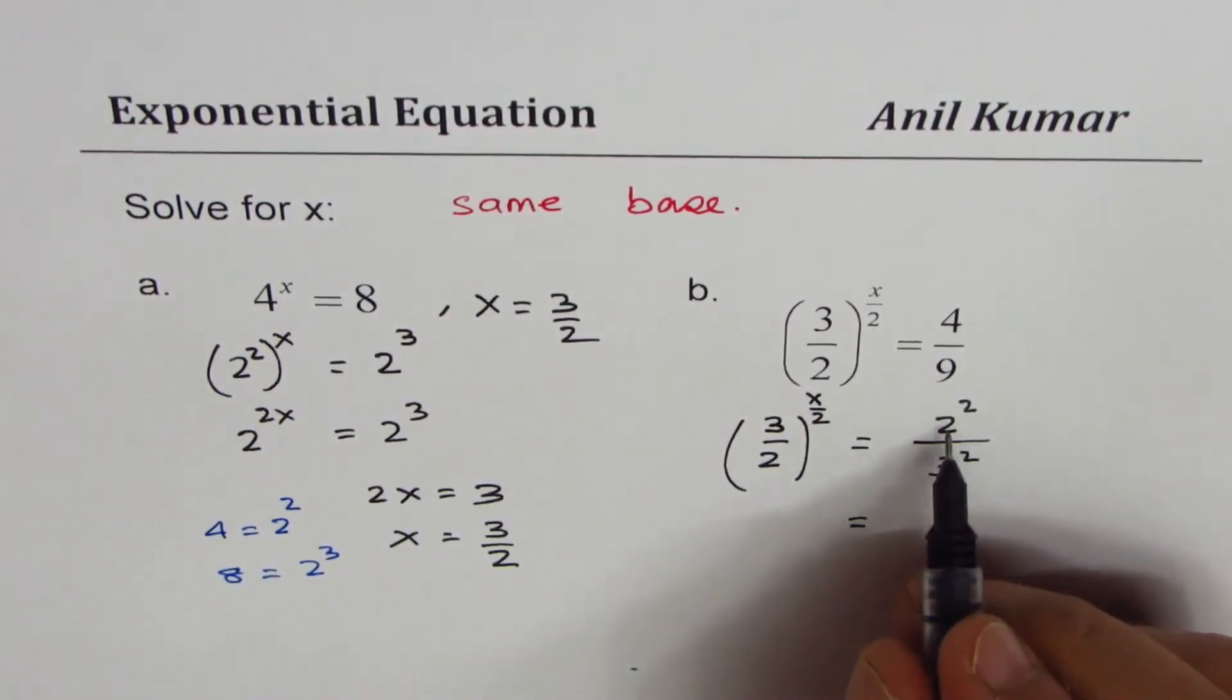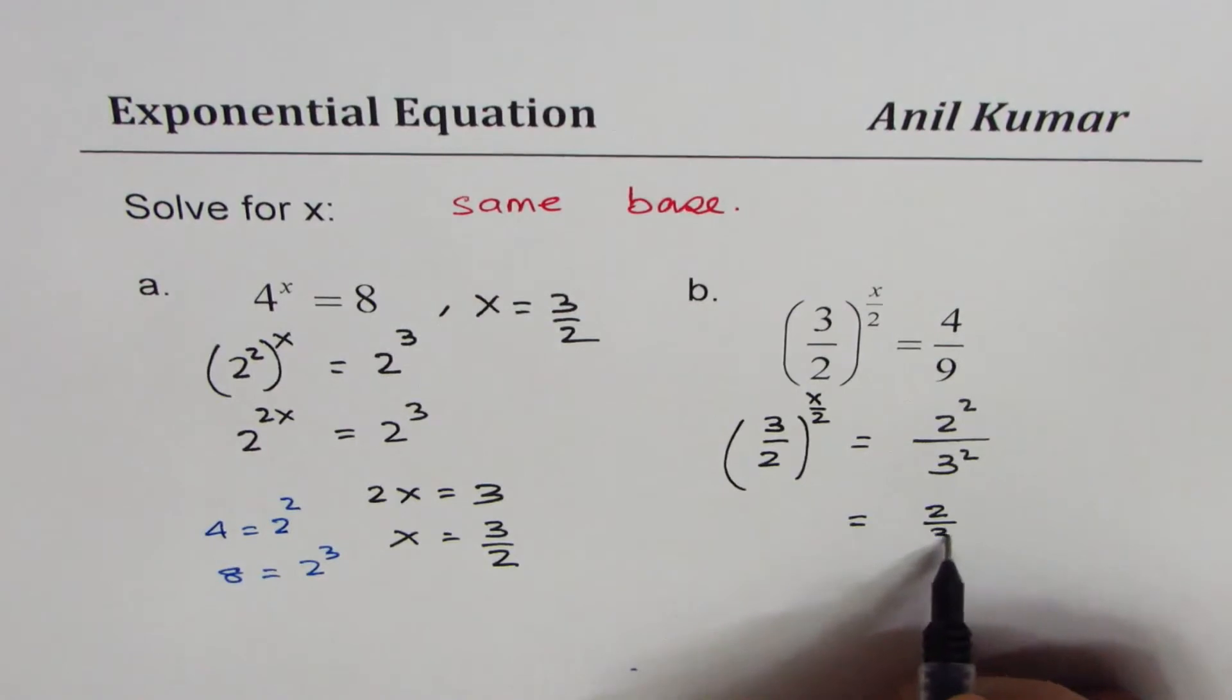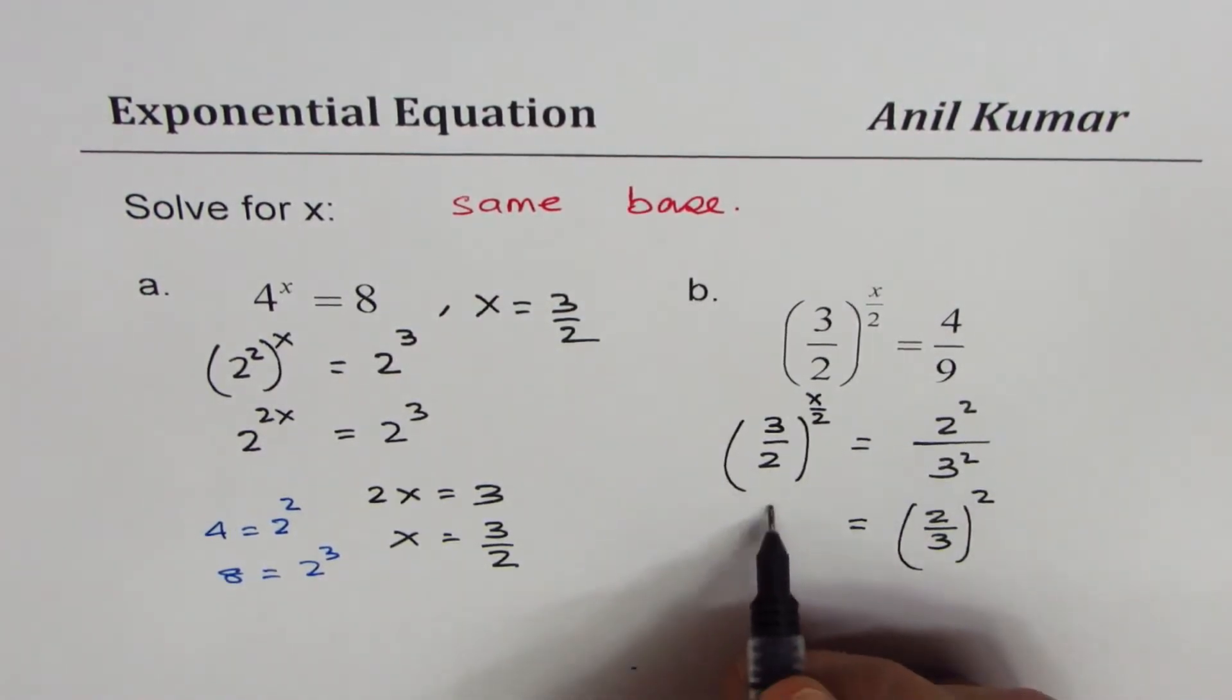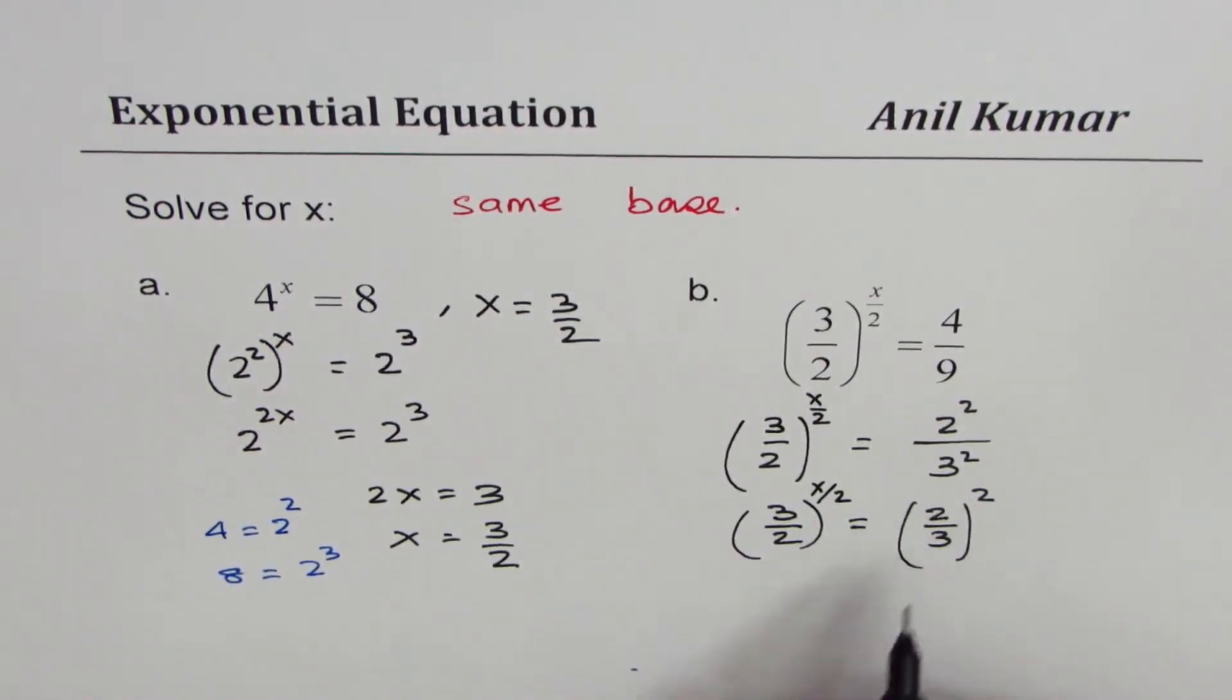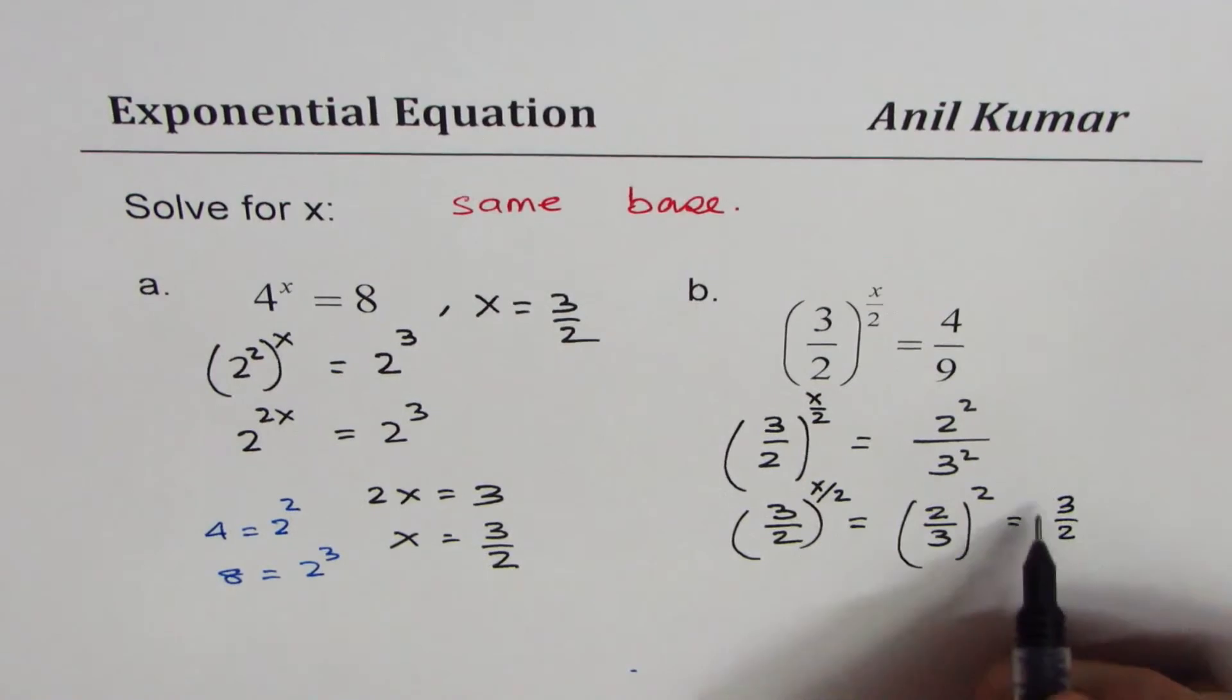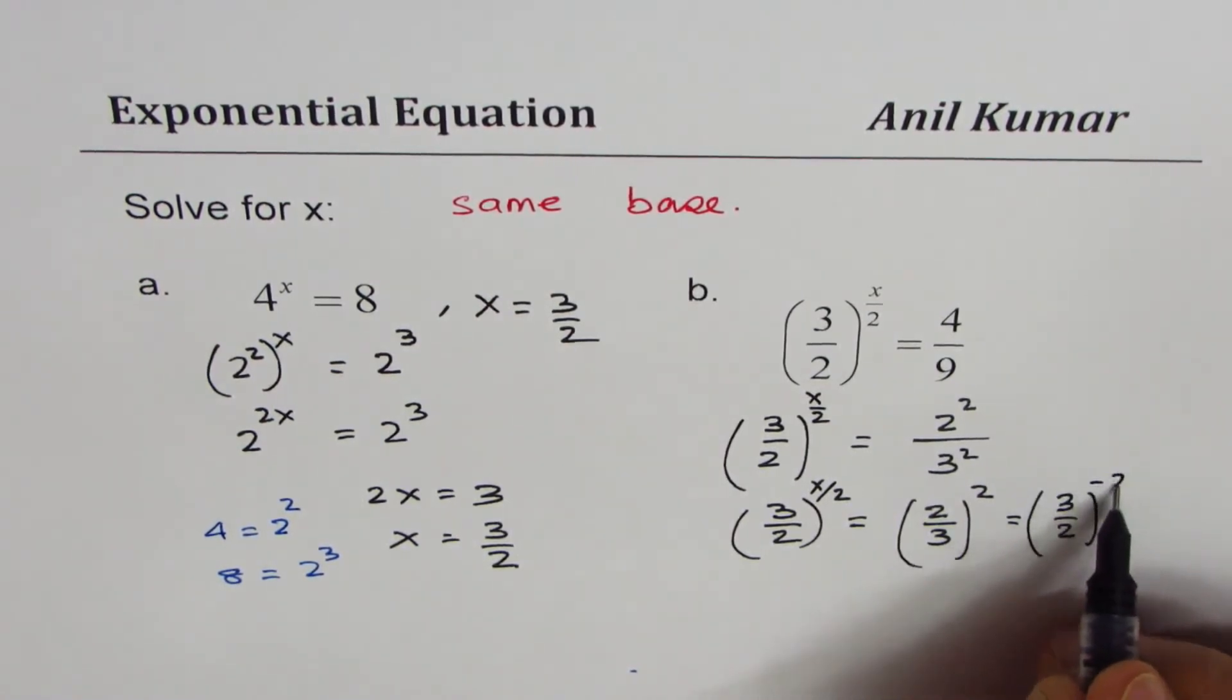That means I could write down the right side as (2/3)^2, right? The left side is (3/2)^(x/2). To get 3/2, we could actually flip it after changing the exponent to negative, so we could do (3/2)^(-2). Do you see that?